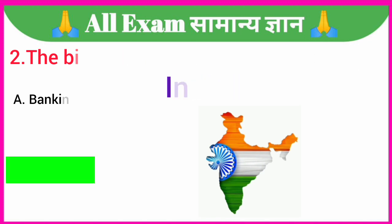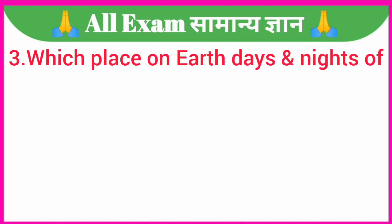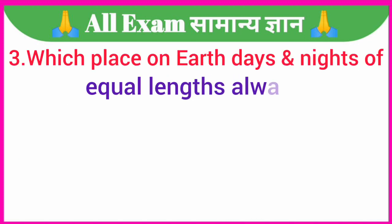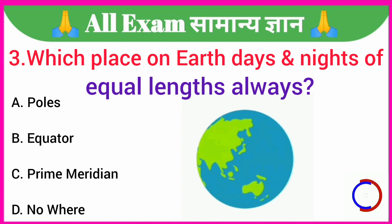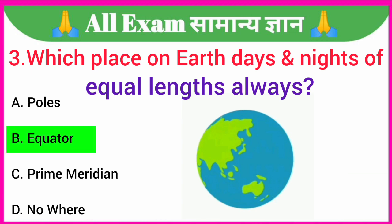Which place on Earth has days or nights of equal lengths always? A. Poles, B. Equator, C. Prime Meridian, D. Nowhere. Your correct answer is option B. Equator.